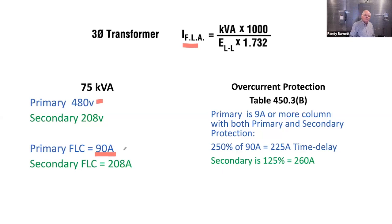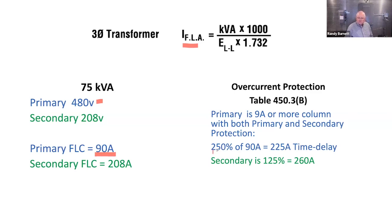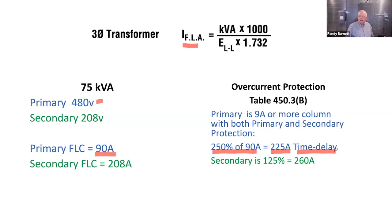Going to Table 450.3b, the first column says primary and secondary protection. For primary protection, when the rated current is 9 amps or more — certainly 90 amps fits — it tells us to take 250% of the full load current. Taking 250% of 90 amps gives us 225 amps — that'll be a time-delay fuse. The transformer is just like a motor: coils of wire that will have inrush current when energized. So I need time-delay protection to avoid blowing fuses as soon as I turn the power on.